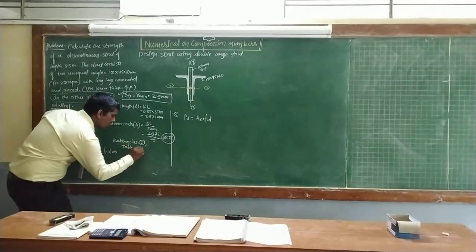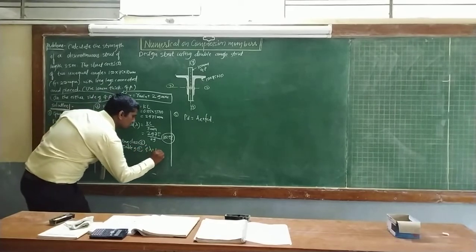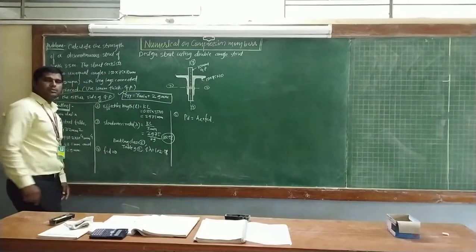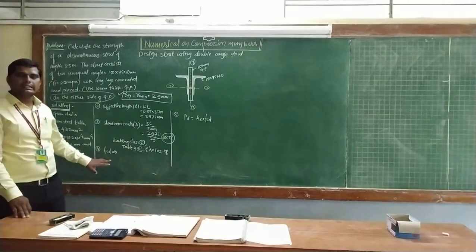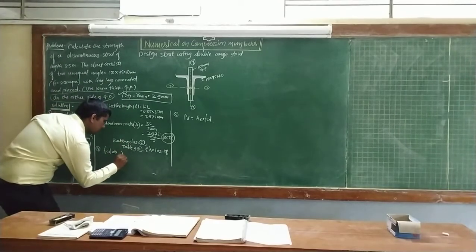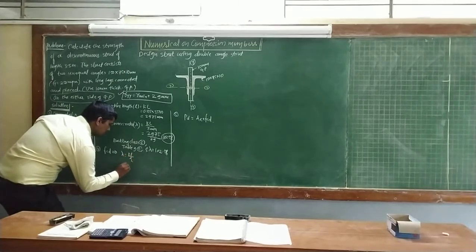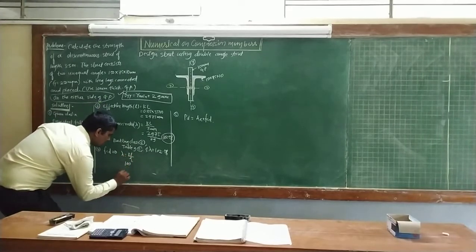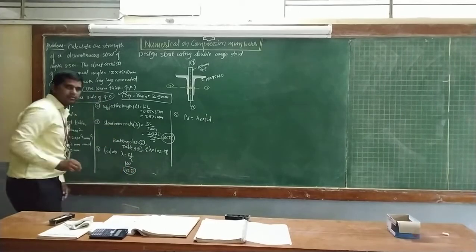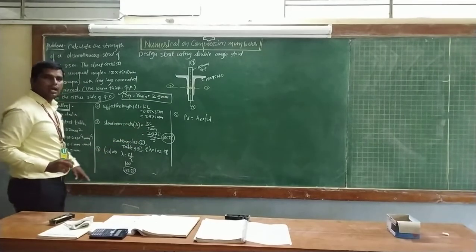Table number 9, for C, and the lambda value is equal to 102.58. Then, to determine the design compressive stress, that is FCD value. The slenderness ratio lambda is equal to KL by r. So between 100 and 102.58, we know this value we have found from the slenderness ratio, lambda equals KL by r minimum.